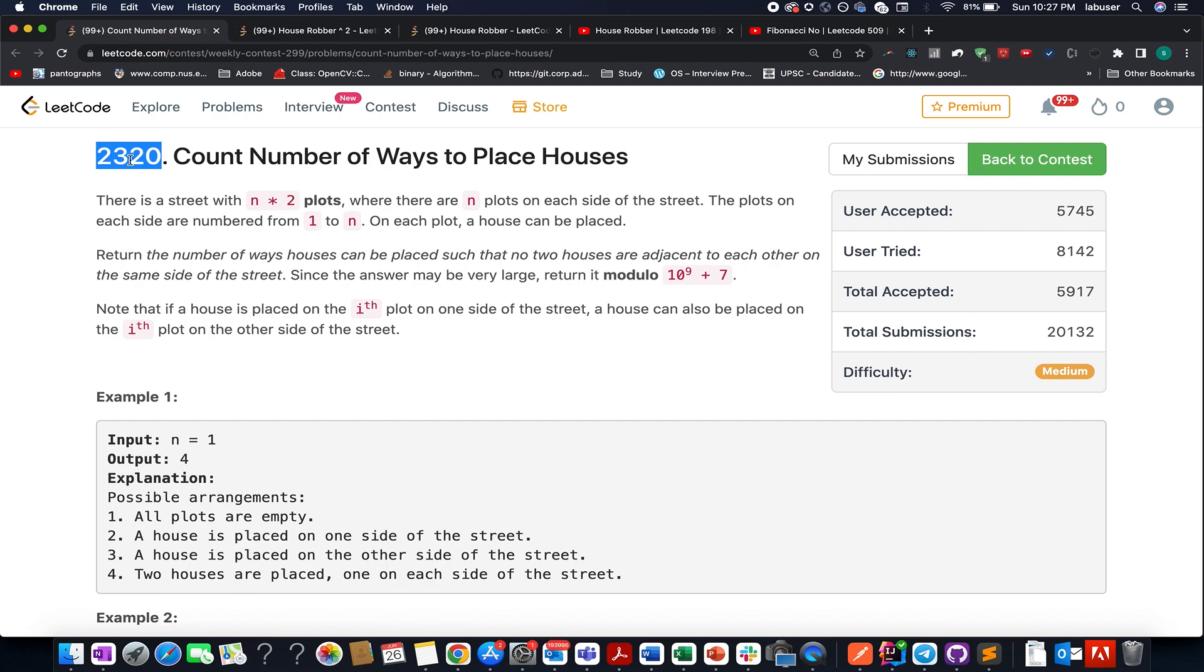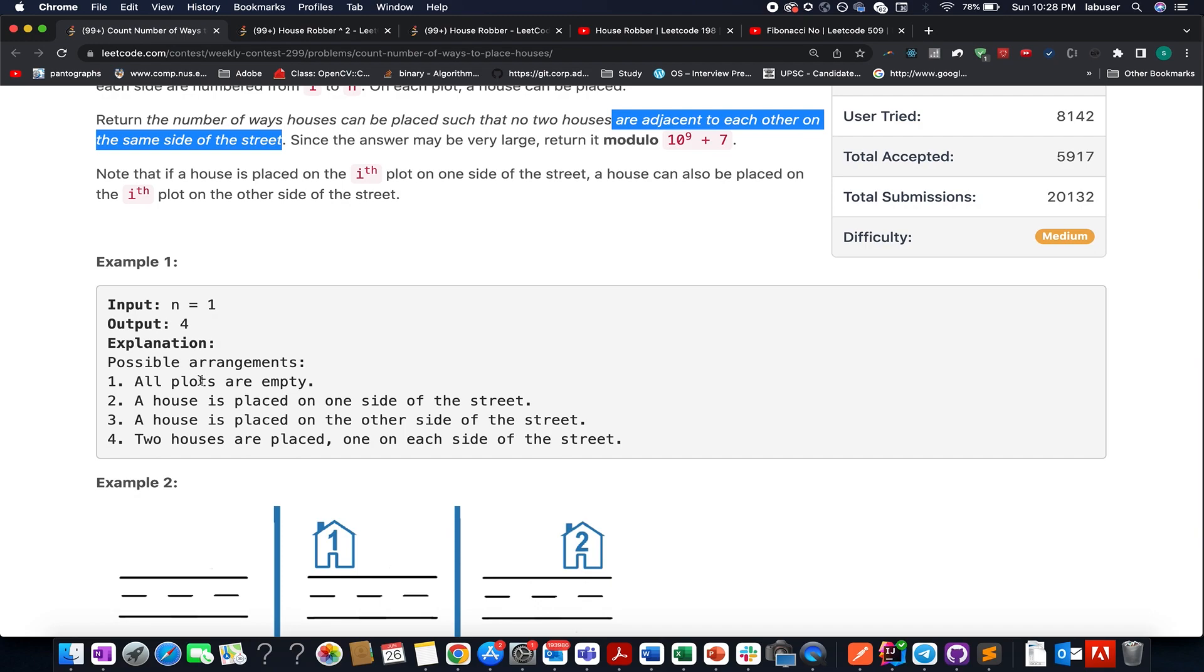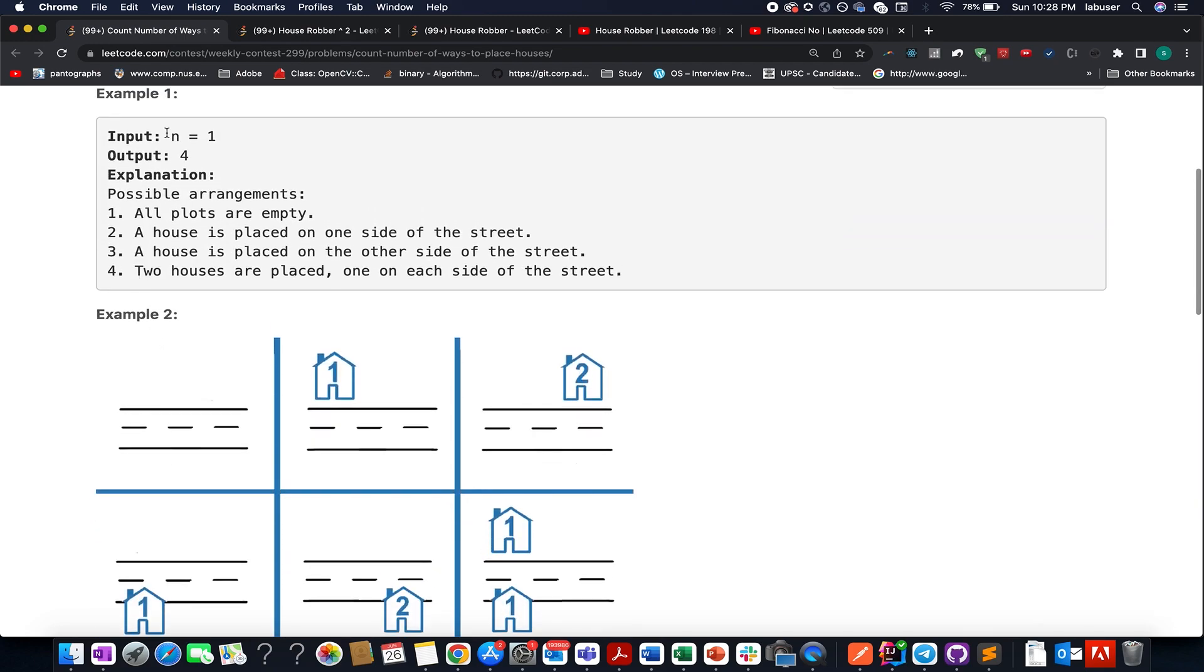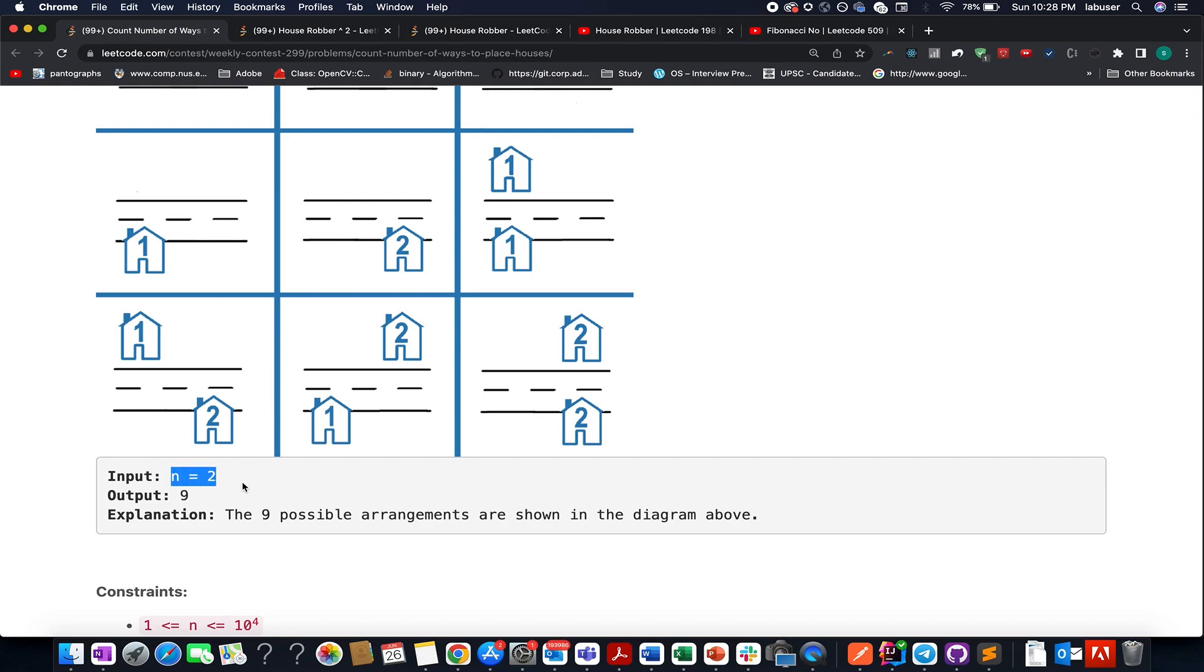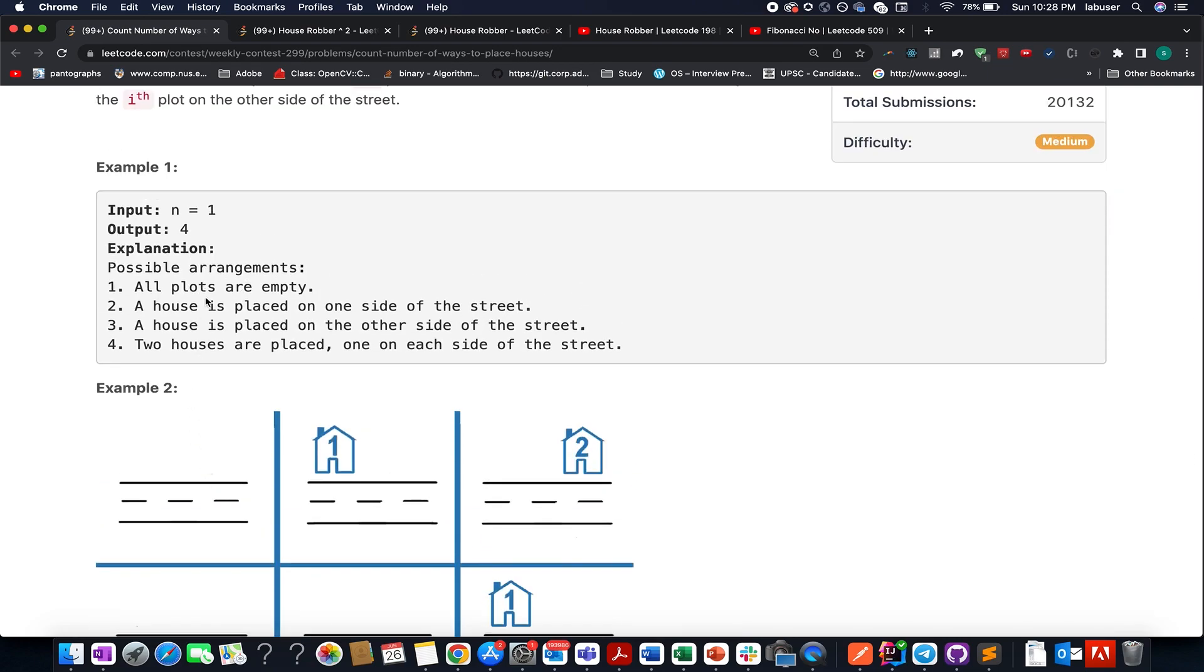Here in this question we are given 2×n plots where houses are to be placed. We need to identify the number of ways in which all these houses can be placed such that no two houses are adjacent to each other on the same side of the street. They have provided us with an example for n equals 1 and n equals 2, where the answers are 4 and 9 respectively.